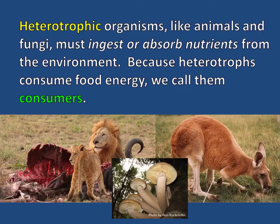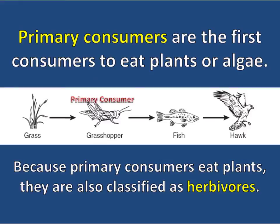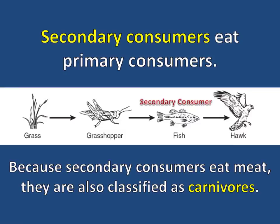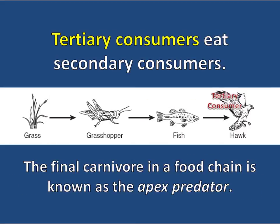Heterotrophic organisms like animals and fungi must ingest or absorb nutrients from the environment. Because heterotrophs consume food energy, we call them consumers. Primary consumers are the first consumers to eat plants or algae. Because primary consumers eat plants, they are classified as herbivores. Secondary consumers eat primary consumers, and because they eat meat, they are classified as carnivores.